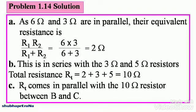As 6 ohm and 3 ohm are in parallel, their equivalent resistance is R1×R2 divided by R1+R2, which equals 6×3 divided by 6+3, giving you 2 ohms. This is in series with the 3 ohm and 5 ohm resistors, so the total resistance Rt equals 2+3+5, which is 10 ohms.